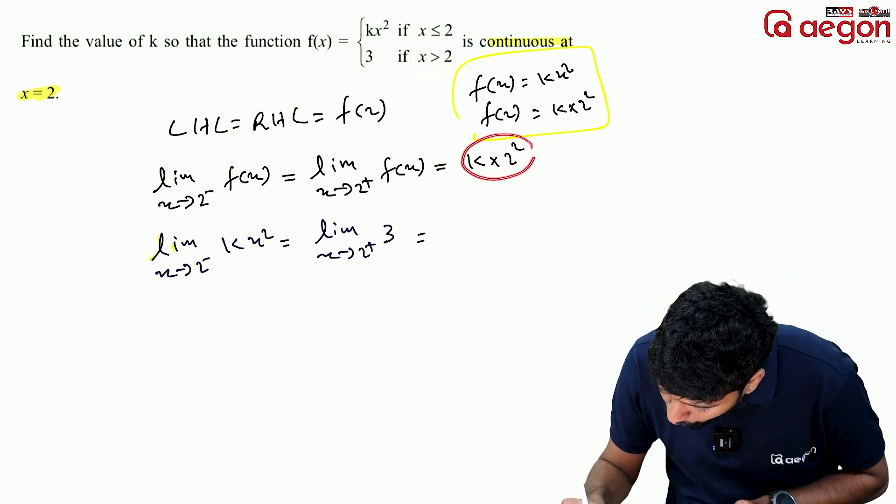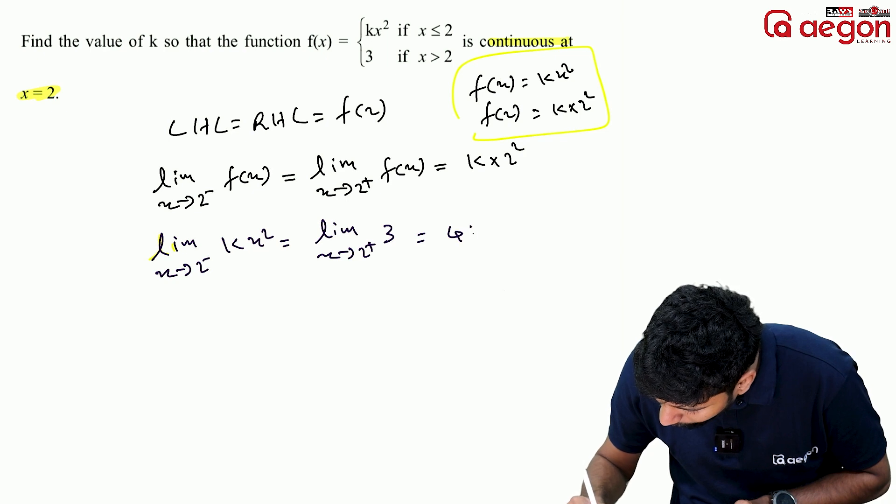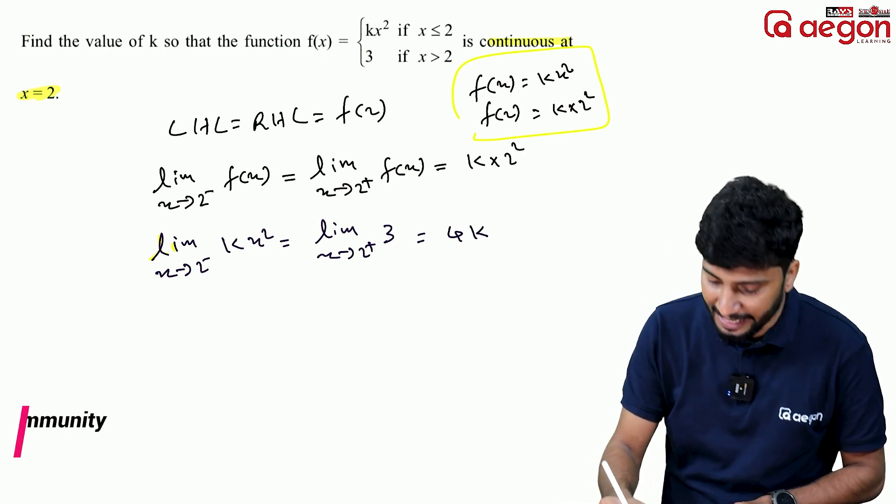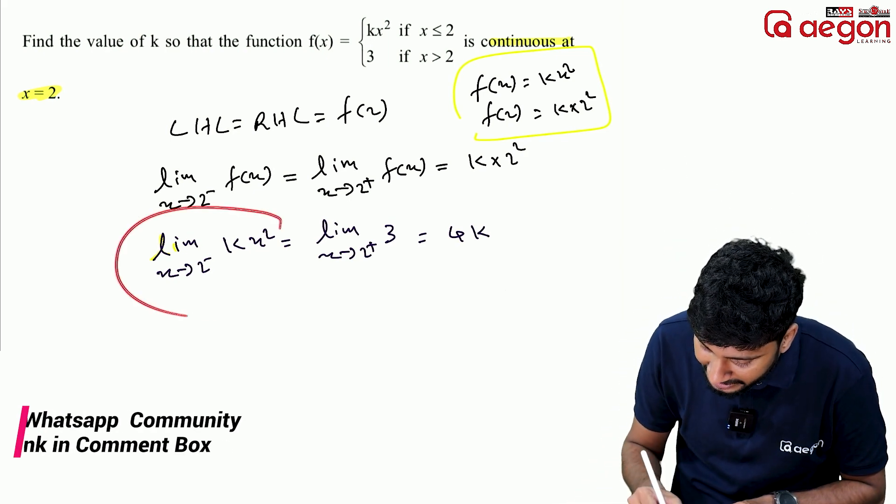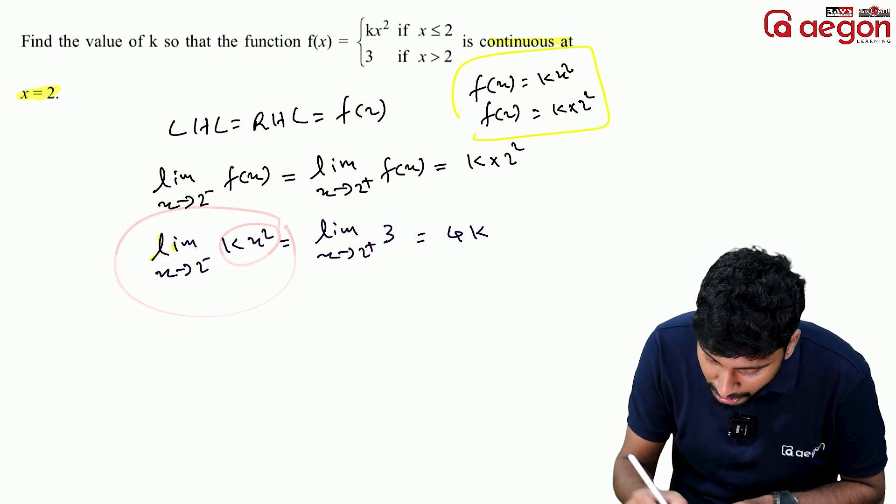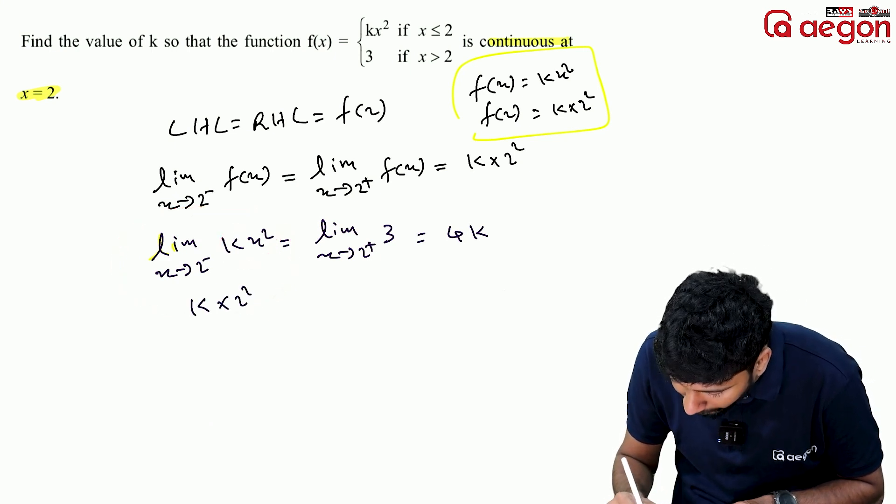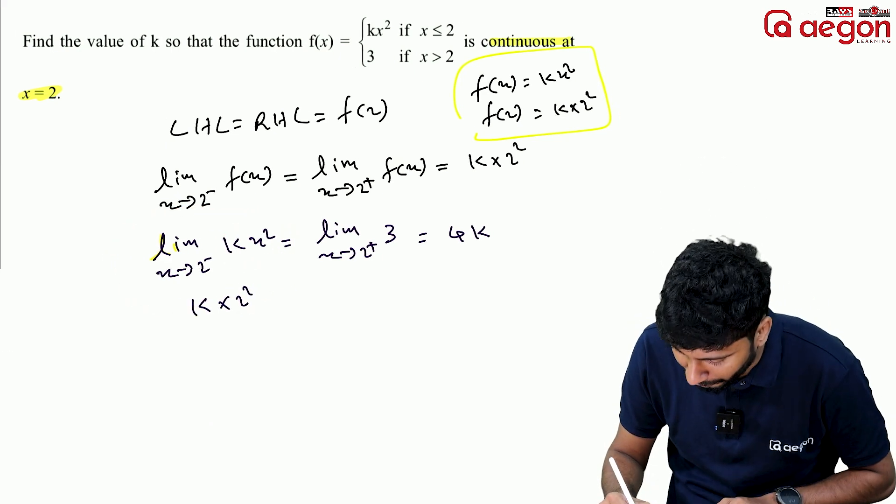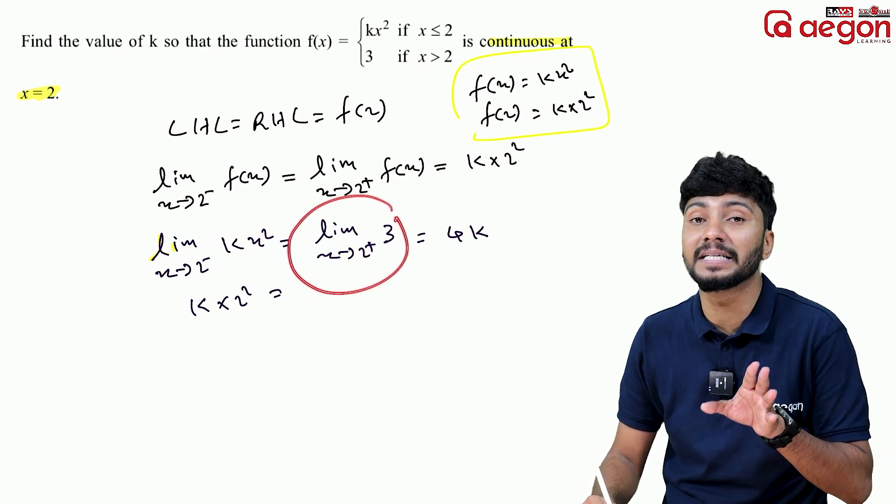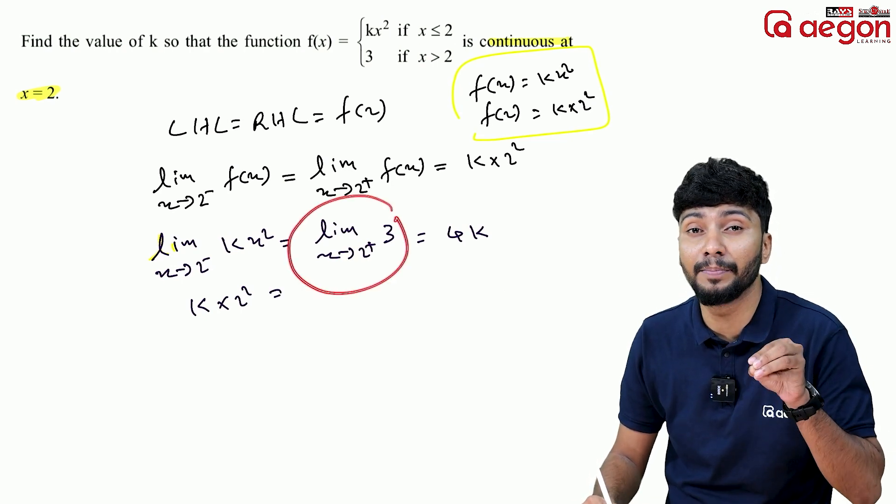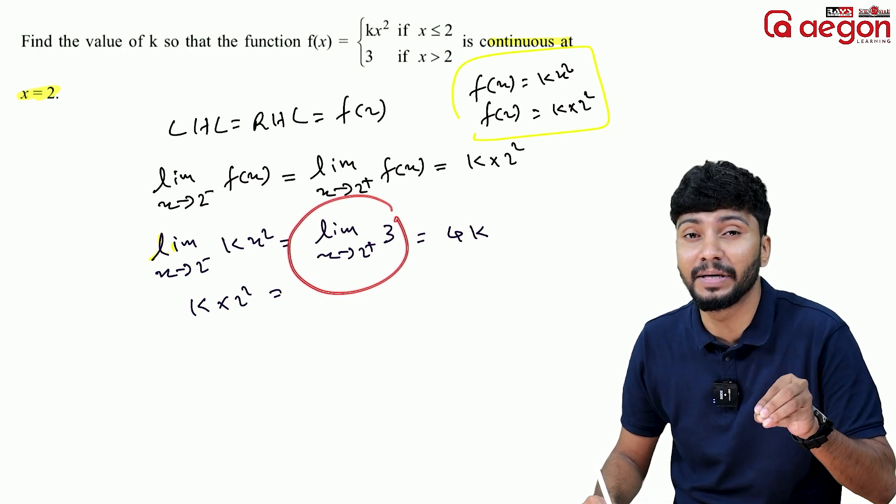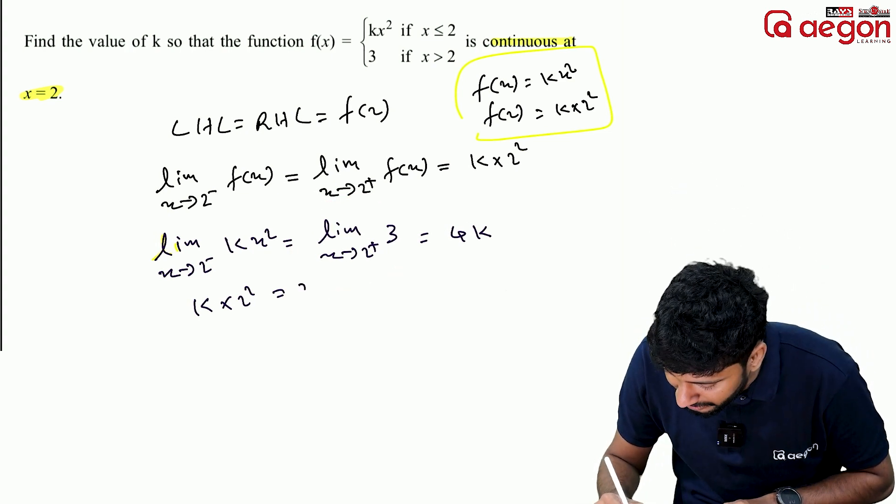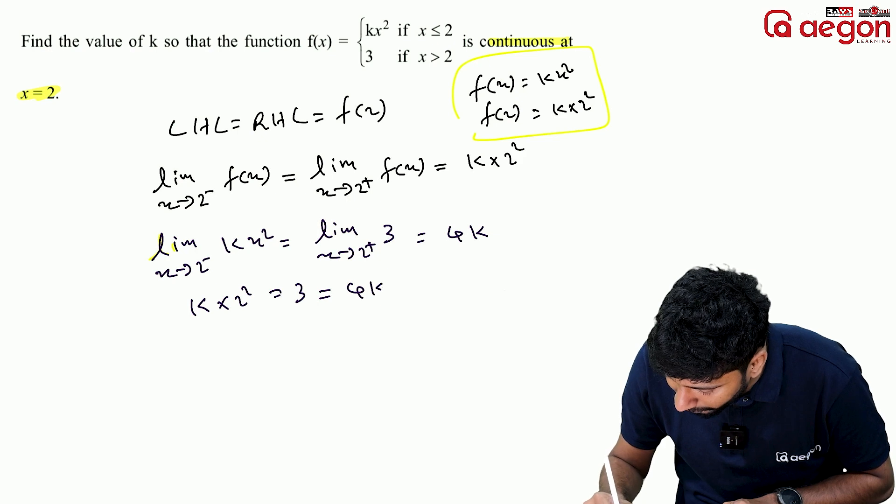Substituting, k times 2 squared equals 4k. The limit on the right side gives us 3. So the constant limit is 3, which means 3 equals 4k.